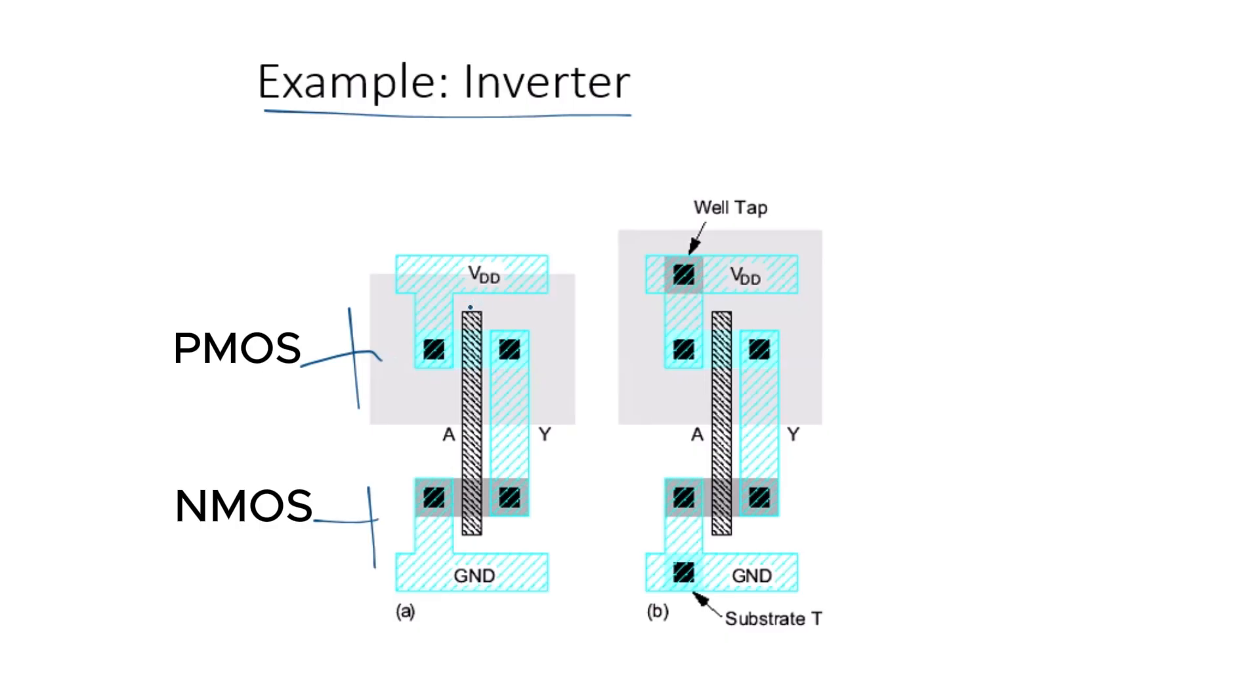As you can see in this layout, the gate of the transistors is made of polysilicon, which is drawn vertically, and the source and drain regions are made of diffusion layers. The metal layers are used to connect the transistors to power (VDD) and ground. These layers must follow strict design rules for spacing and overlap to ensure proper functionality.